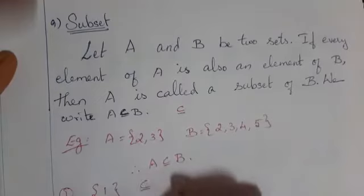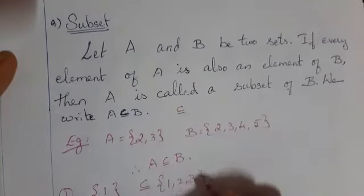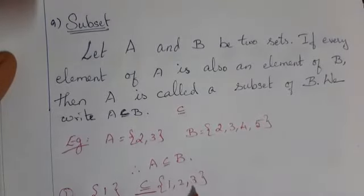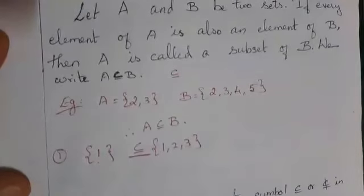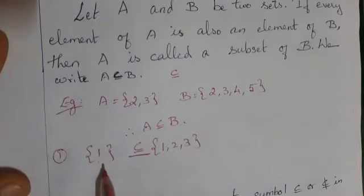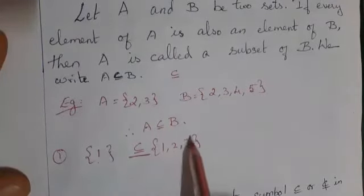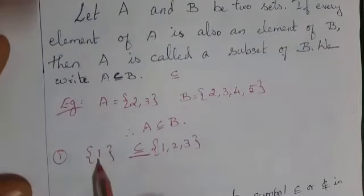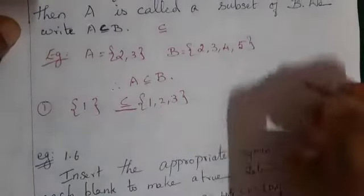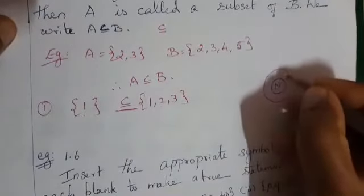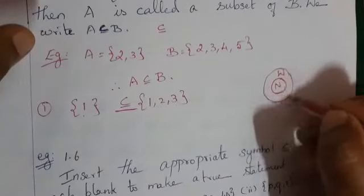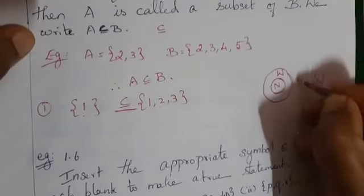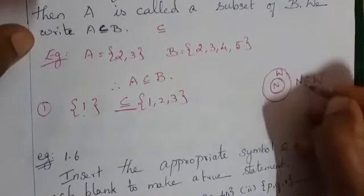In {1, 2, 3}, which is the bigger set, you have only 1 in the smaller set. Therefore, {1} is the subset of {1, 2, 3}. You are taking only 1 for the set. Already you know about natural numbers and whole numbers. From this you can take one more example: N is a subset of whole numbers. Because whole numbers are the biggest, natural numbers are the smallest. Therefore, natural numbers are a subset of whole numbers.